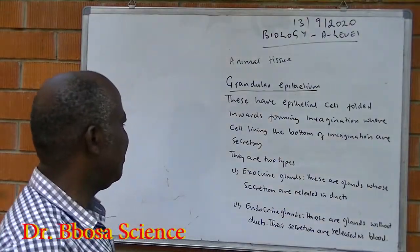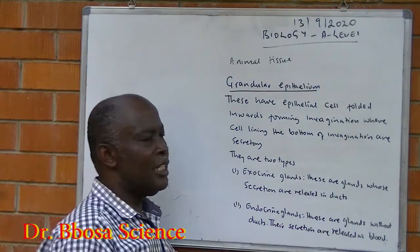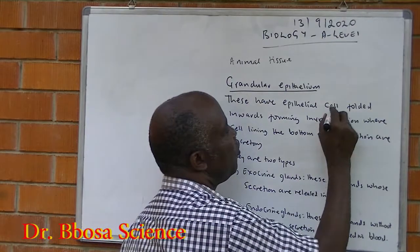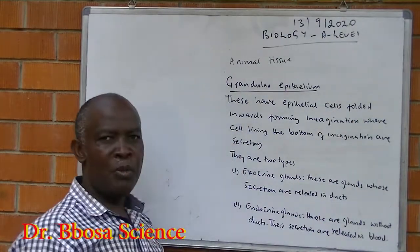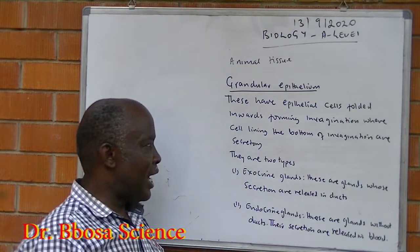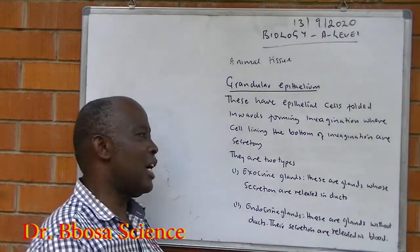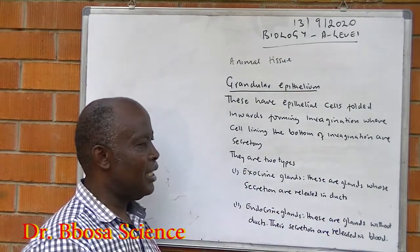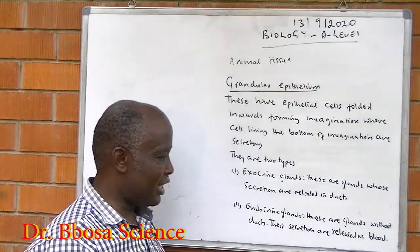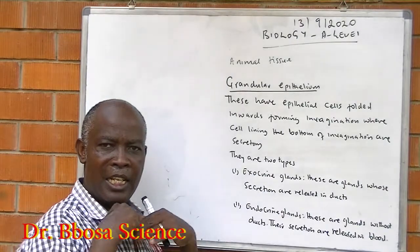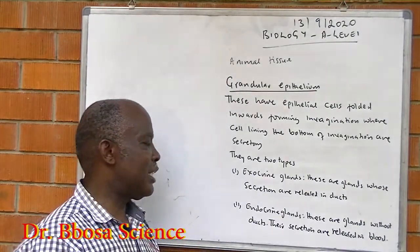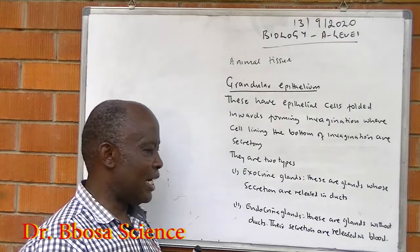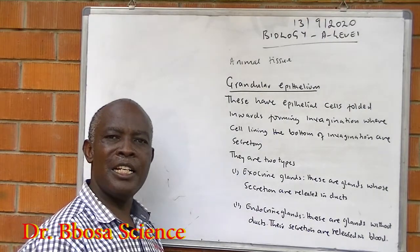Glandular epithelium. These have epithelial cells folded inwards, forming invaginations, where the cells lining the bottom of the invagination are secretory. There are two types: exocrine glands, which are glands with ducts — they release their secretions to the external environment through ducts. While endocrine glands are glands without ducts — their secretions are released into the blood.